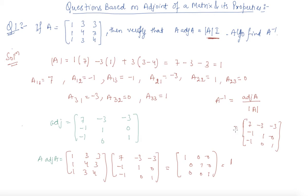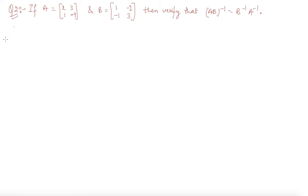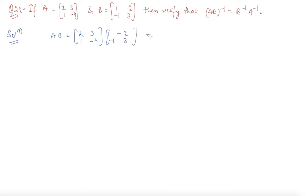Now let us discuss one more question. Here is the question: if A and B are given matrices, then we need to verify that (AB) inverse equals B inverse times A inverse. So first we will find out the value of AB. The matrix AB is coming out to be 2, 3 / 1, minus 1 multiplied through, giving us minus 1, 5 / 5, minus 4. This is the AB matrix.